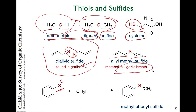Sulfur compounds have very good nucleophiles, as we saw in the previous chapter. Doing SN2 substitution on things like iodomethane is a way to make sulfides from thiol compounds.